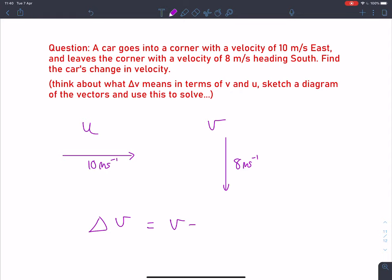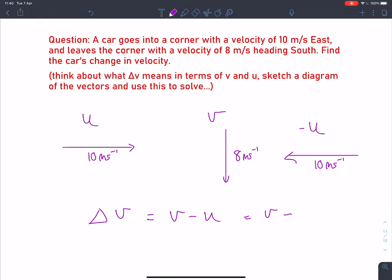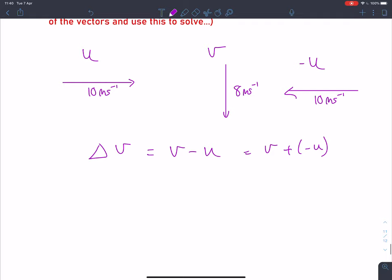Find the car's change in velocity. Change in velocity is given by V minus U. I've got V and U here. What I need to find is minus U. Minus U is exactly the same magnitude but in the opposite direction. Now that I've got minus U, I can add that vector to my velocity vector.